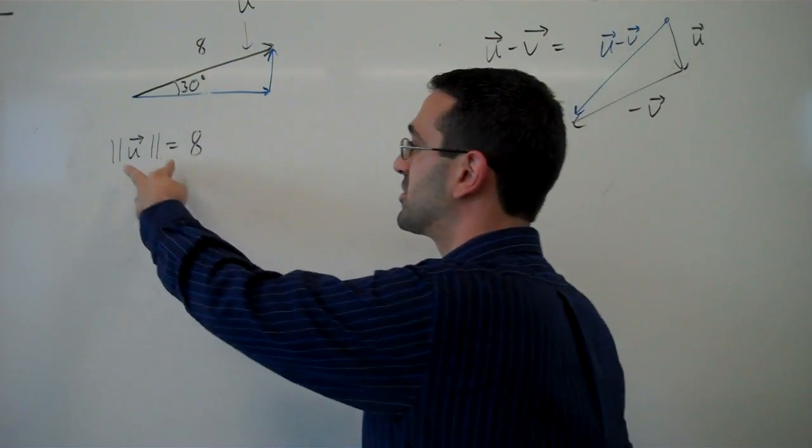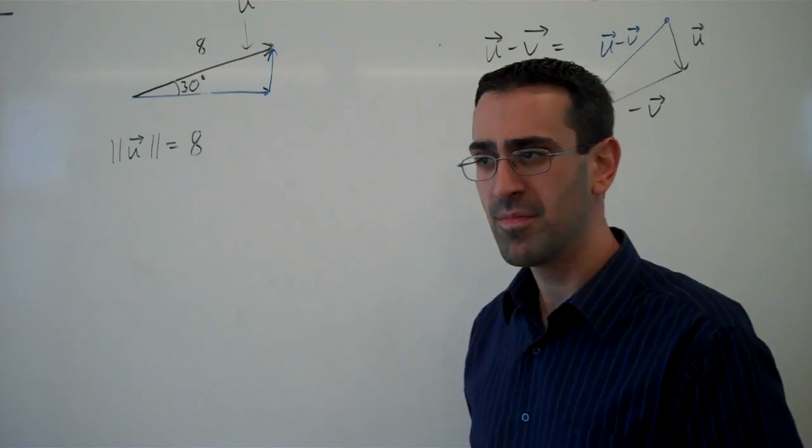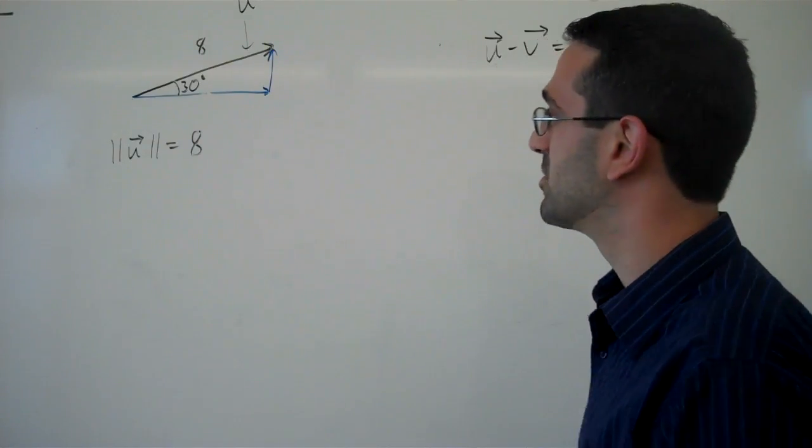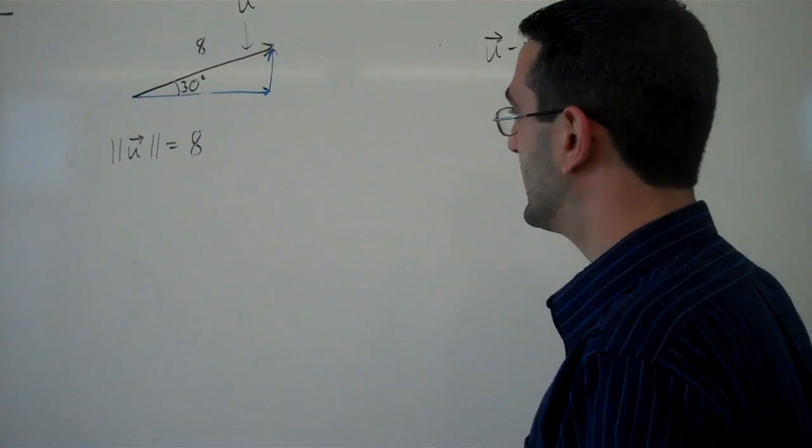These double bar absolute value symbols, or vector norm symbols, are used to represent the magnitude of the vector. Sometimes you'll just see a single absolute value bar used, but this is more common.